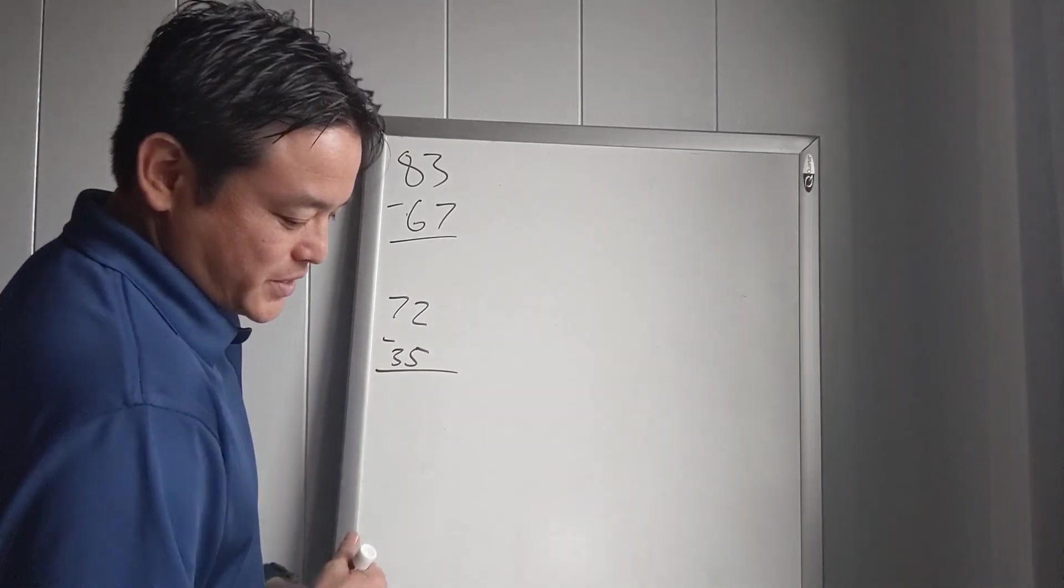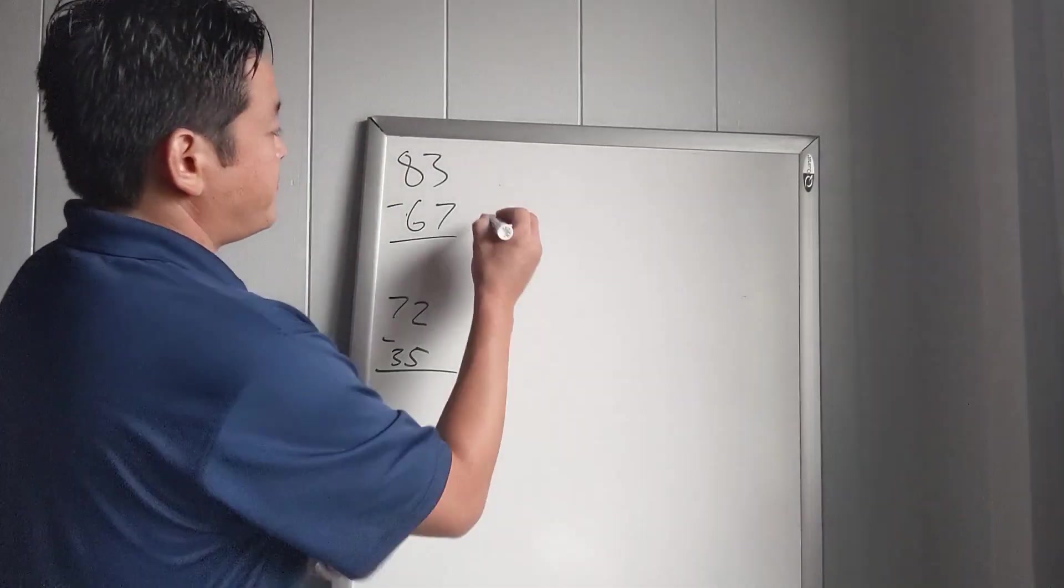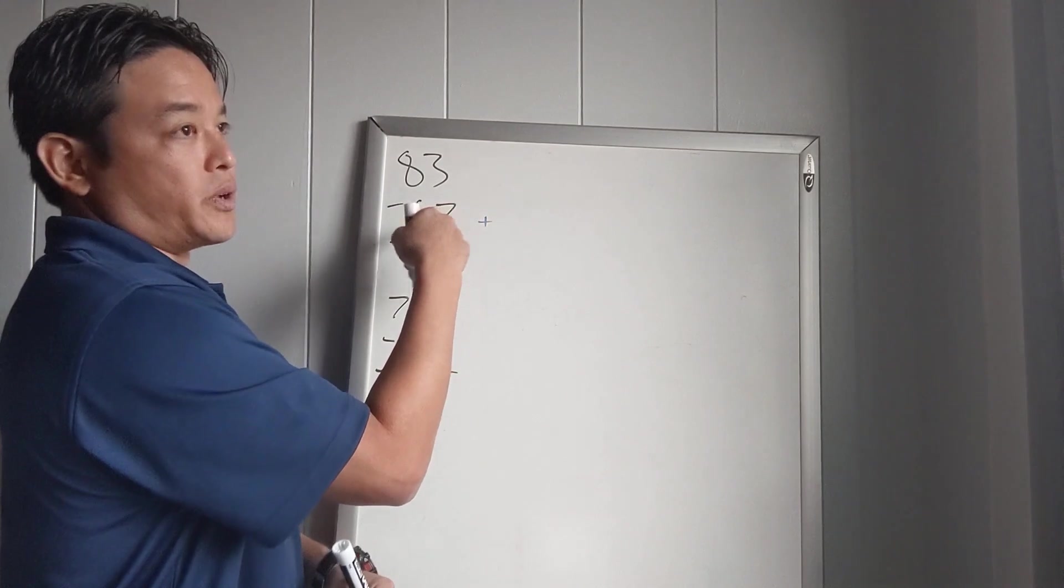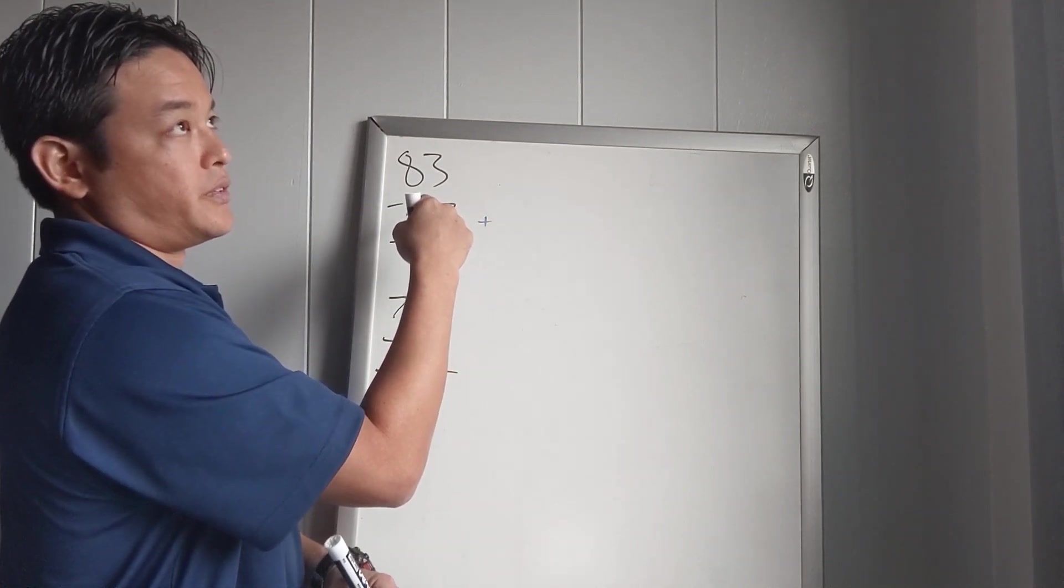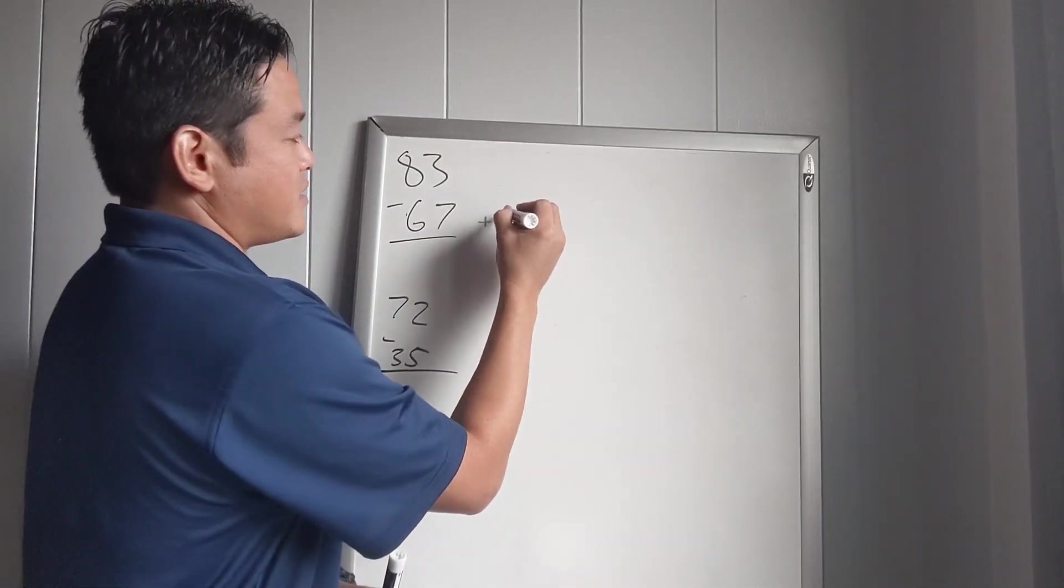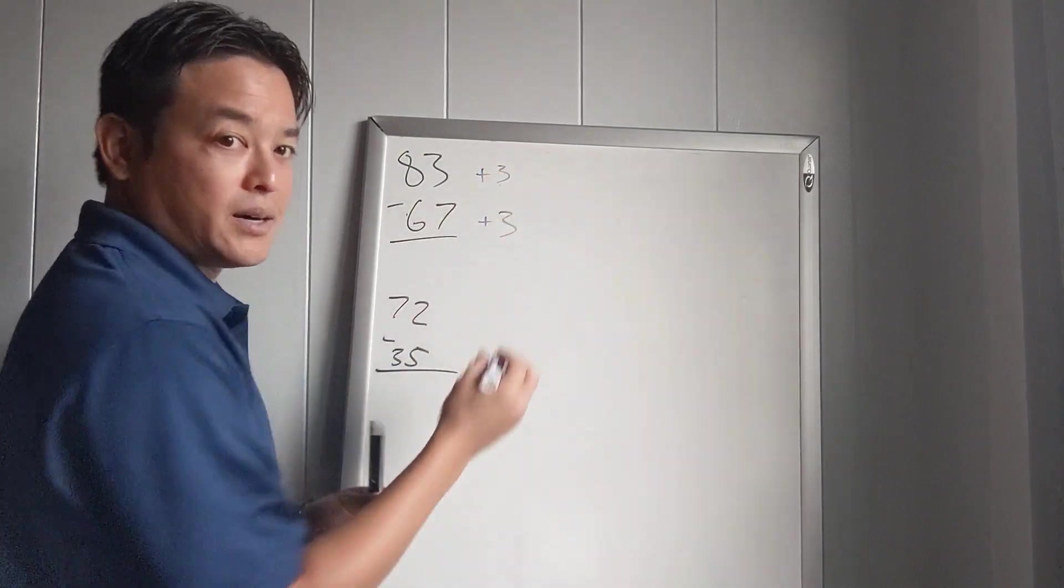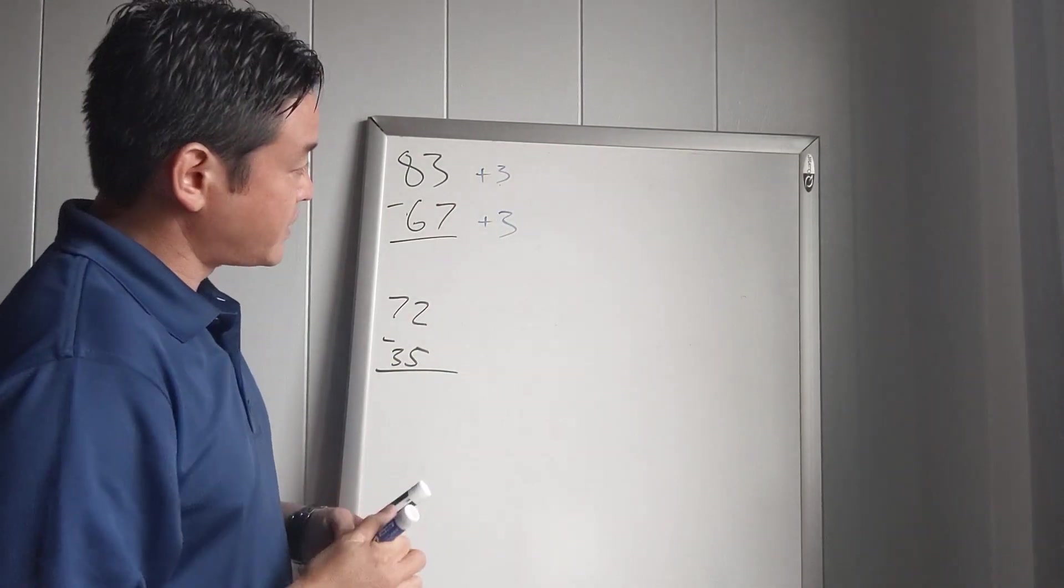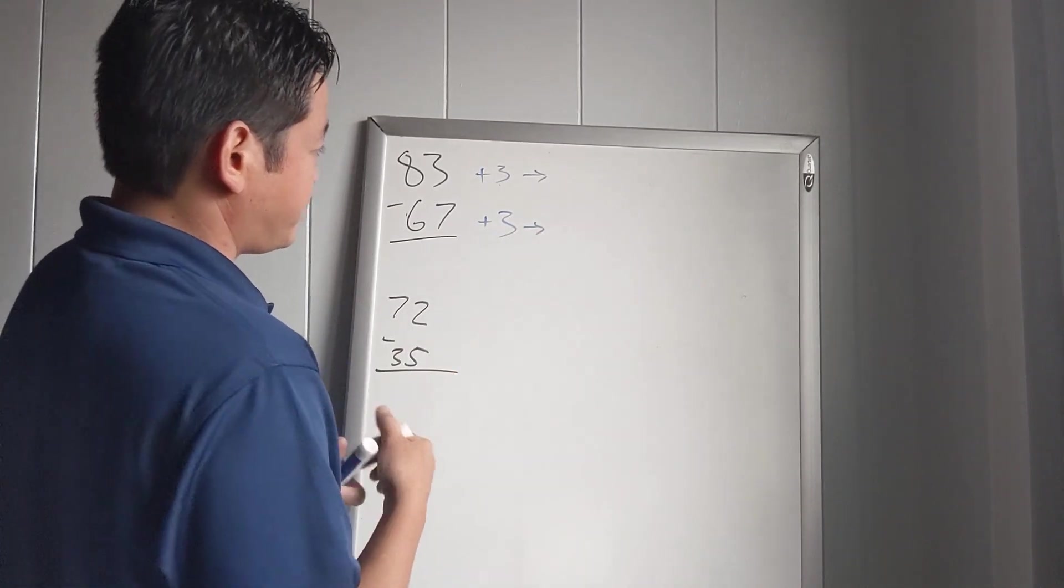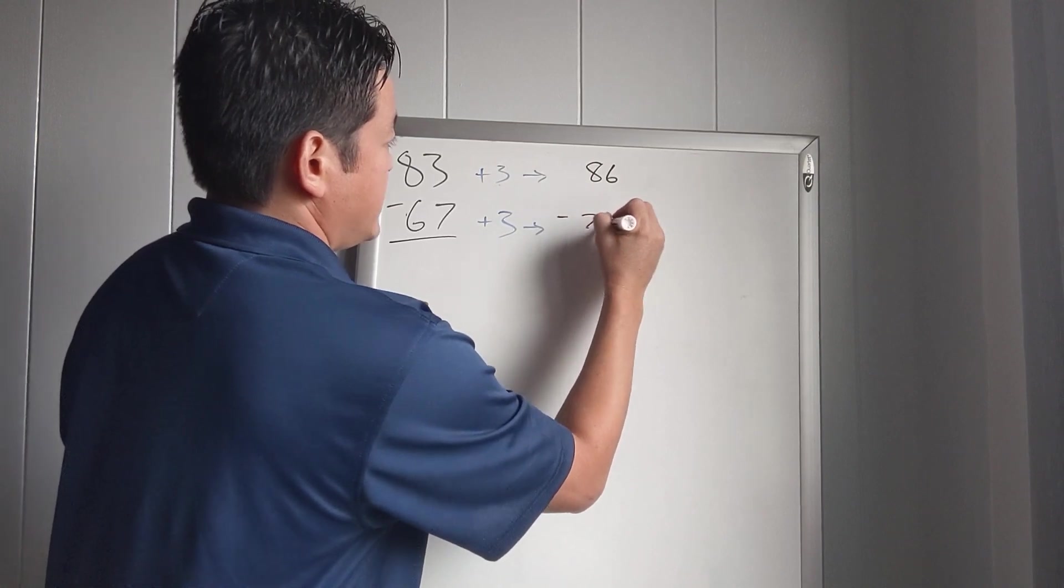Okay, hope you had a chance to try these problems on your own. Again here, we're going to try and get this to a whole number, or a number that has all zeros except for the first. So here we're going to add 3, and because we add 3 to the bottom, we add 3 to the top. This will turn into 86 minus 70.